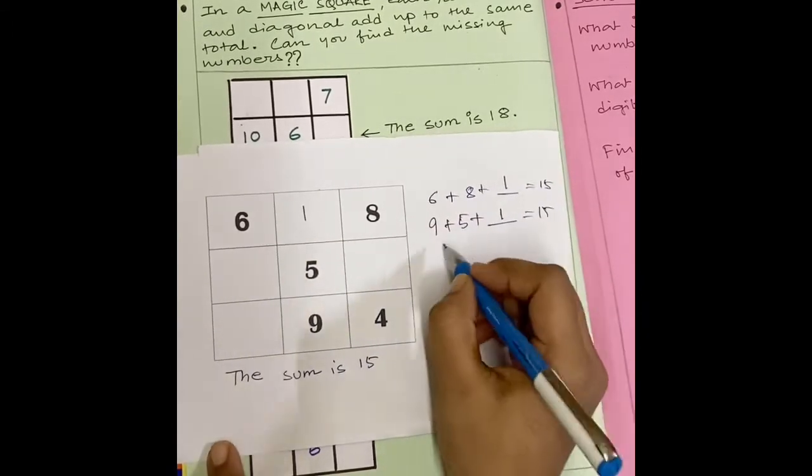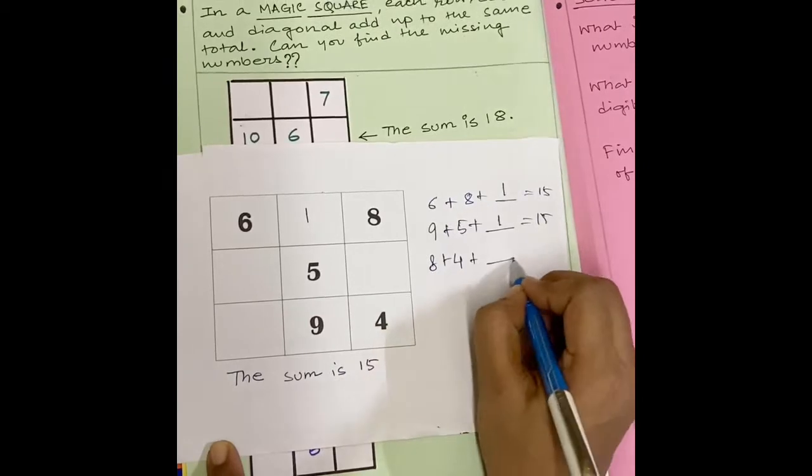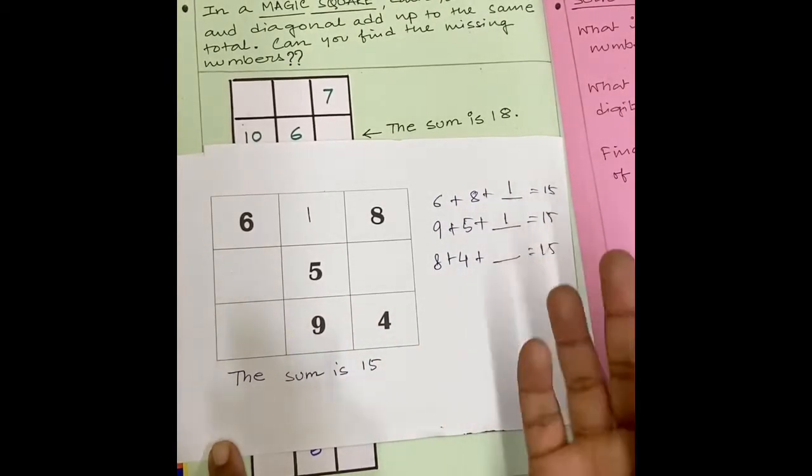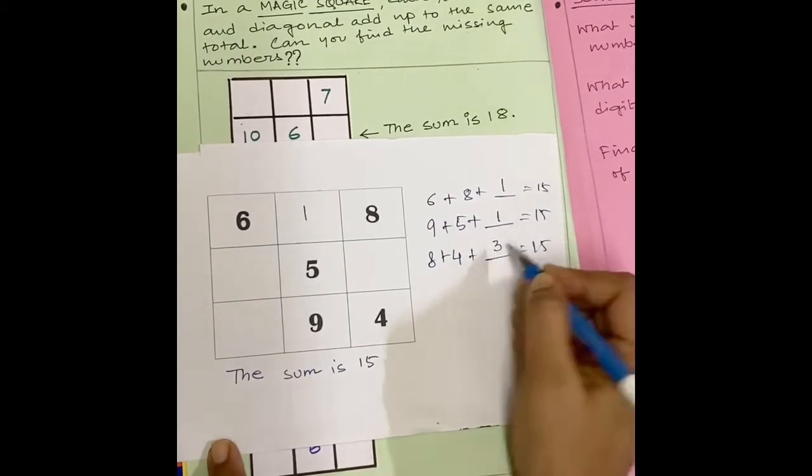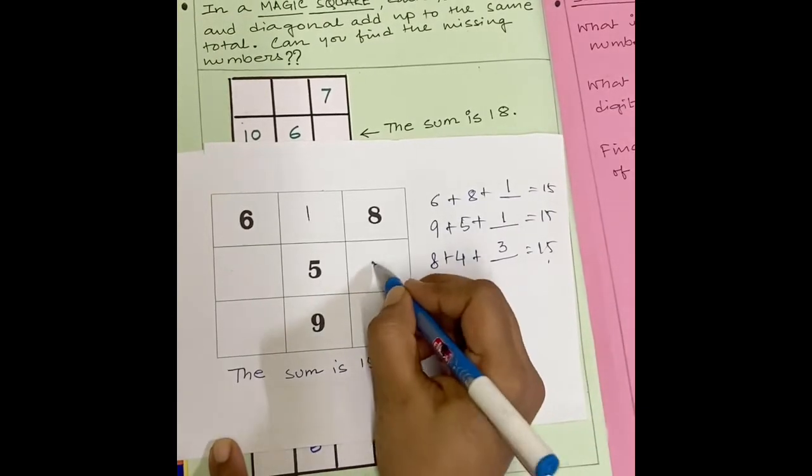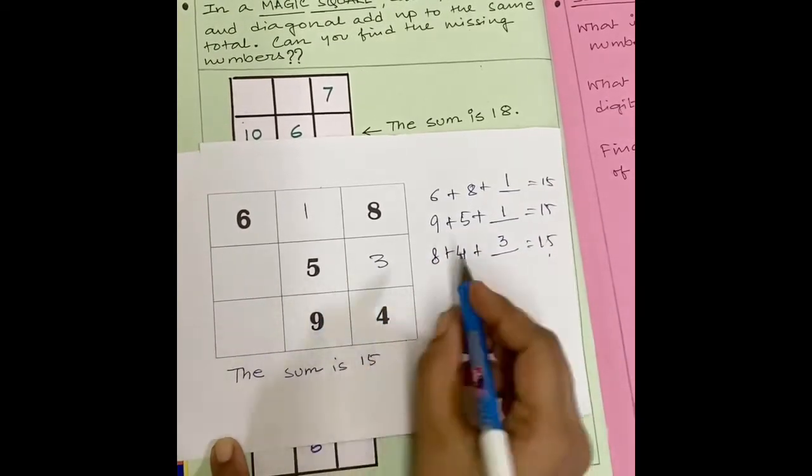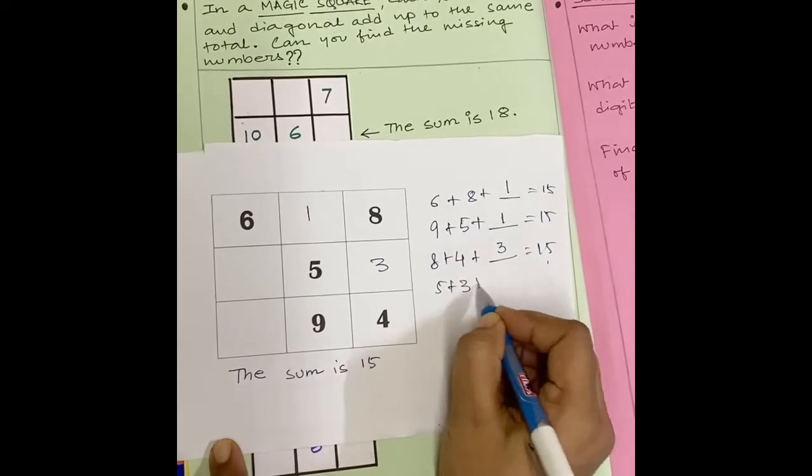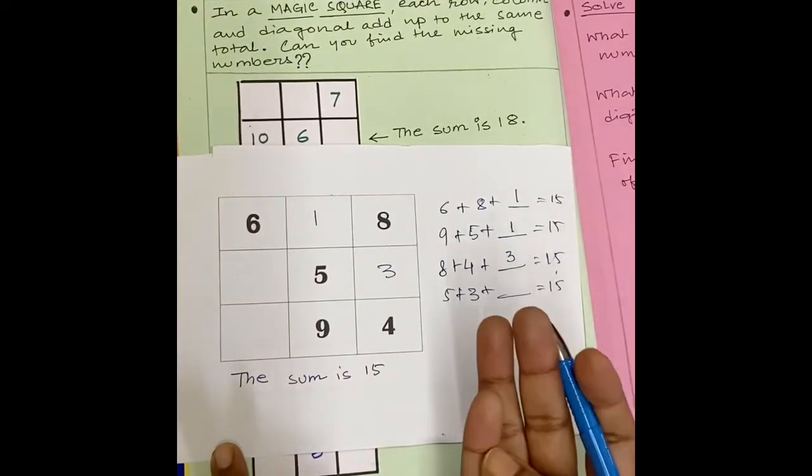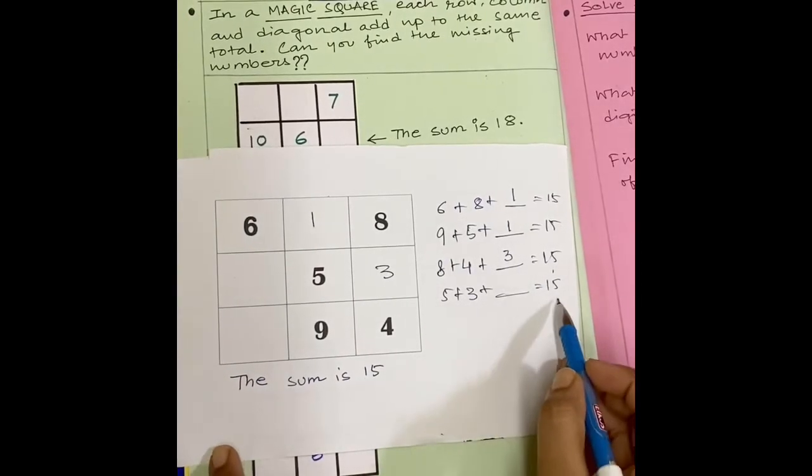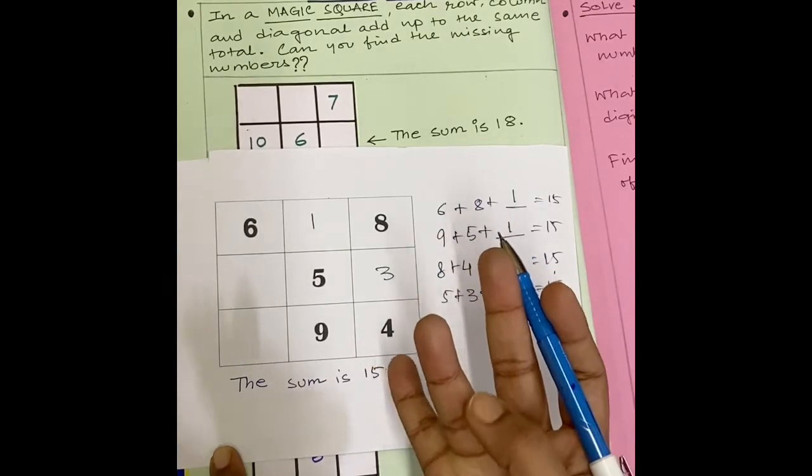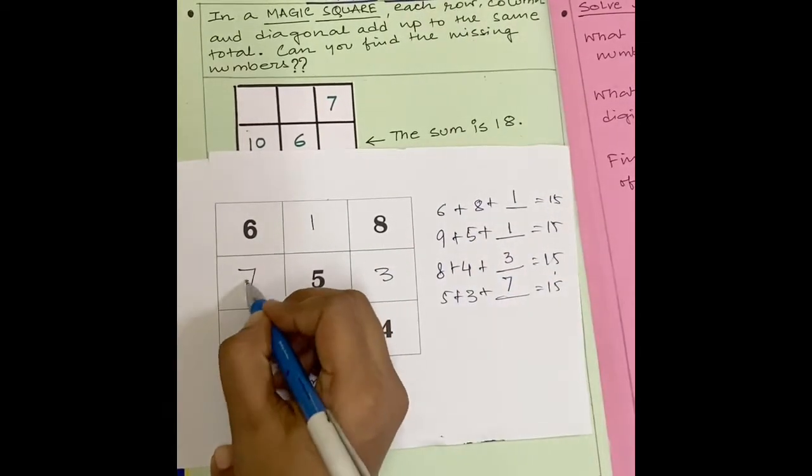Now, 8 plus 4 plus how much to make 15? 8, 9, 10, 11, 12. So, 12 plus 3. 12, 13, 14, 15. We can make it 15. So, 3 here. Now, 5 plus 3 plus how much will make 15? 5 plus 3, 5, 6, 7, 8. 8 plus how much? We will make 15. 8, 9, 10, 11, 12, 13, 14, 15. So, 7. So, here is 7.